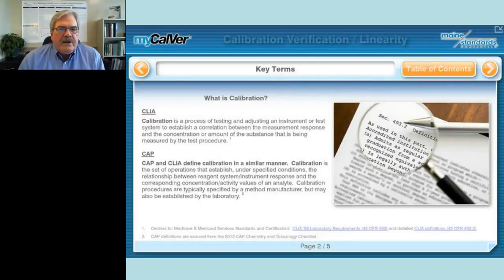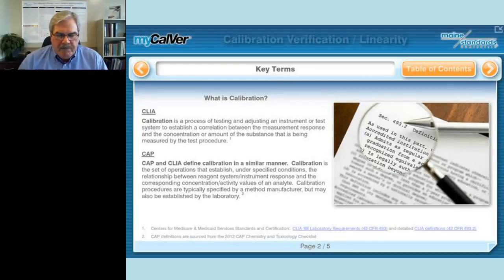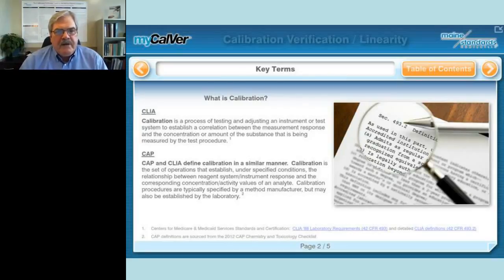The first key term is calibration. When I started working in the lab, we ran calibration curves all the time — you pipetted test tubes full of standards, ran them, and drew curves on graph paper to read your unknowns off the curve. Your modern instruments do something very similar to that. Calibration is the process of adjusting the instrument output and correlating it with the concentration of the analyte in the sample. CAP has a very similar definition with a few more words, but it's essentially the same idea.